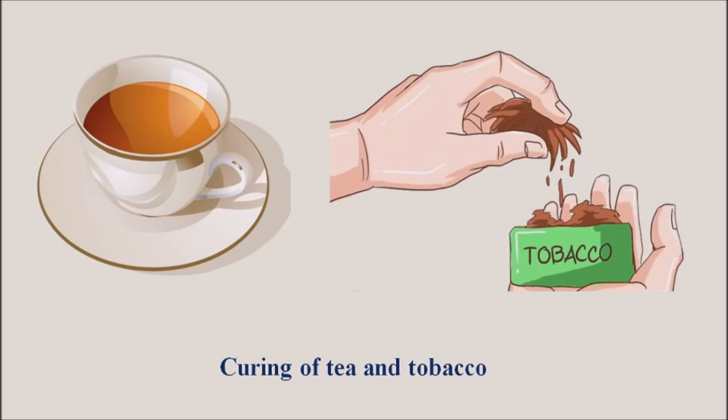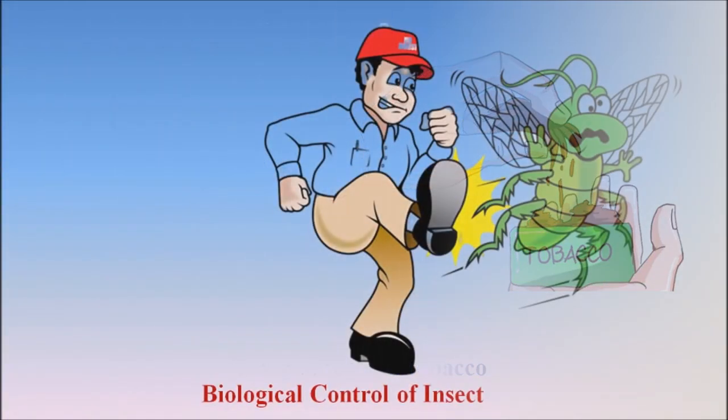Next is the curing of tea and tobacco. Curing of tea and tobacco is done by some bacteria which give a particular taste, flavor and smell to the tea and tobacco.